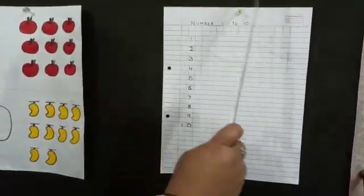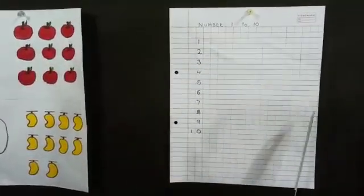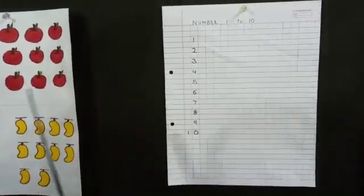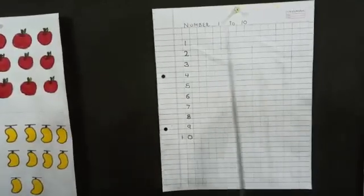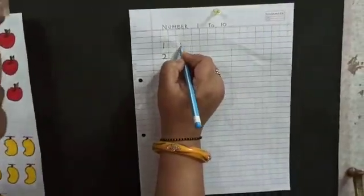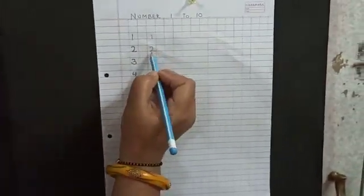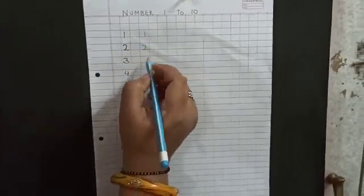Now here, this is a page. It's written 1 to 10. Now we are going to write 1 to 10 like this. One, two. We are going to touch the bottom line only, not the upper line. Only bottom line.